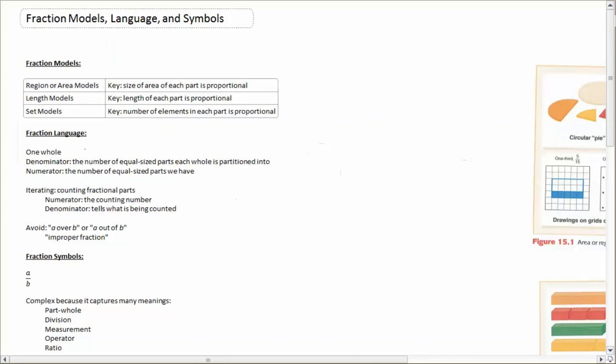Also understanding what the denominator and the numerator are for fractions is very important. So if I look at, for example, one half, what does the one mean and what does the two mean? Which is which? The denominator is the bottom number, and this tells us the number of equal sized parts that each whole is partitioned into. So for example, if I'm looking at the pizza again, that tells me that this pizza is cut into two equal parts.